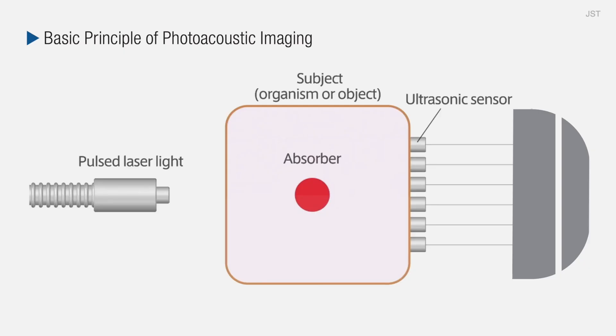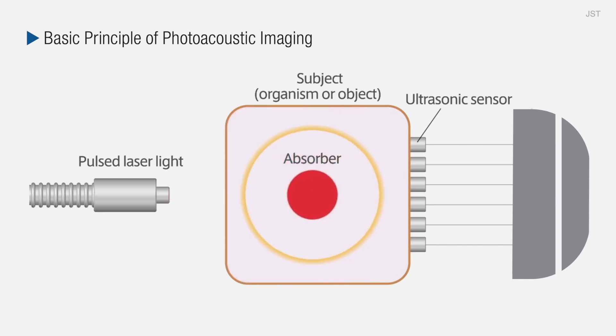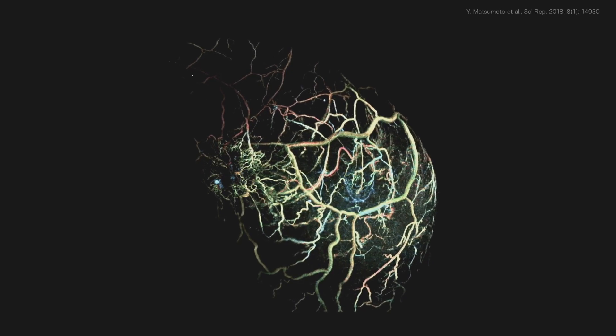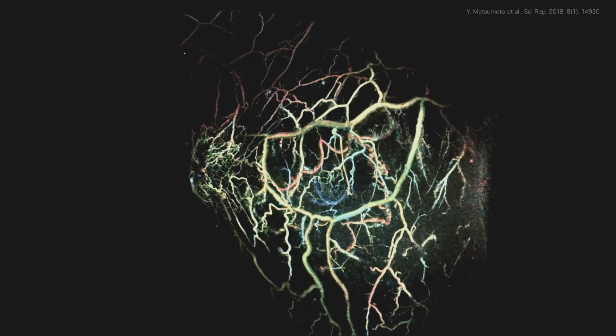One of the imaging types that we utilize, that we're really known for, is called photoacoustic imaging. This is a new technology described as a light in, sound out technique. We utilize light to excite the molecule, and instead of detecting light as in a fluorescent readout, we're actually detecting ultrasound. Detecting ultrasound is really powerful because it can travel through your body unperturbed, allowing us to obtain much higher resolution and image much deeper into the body.